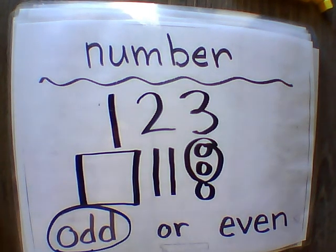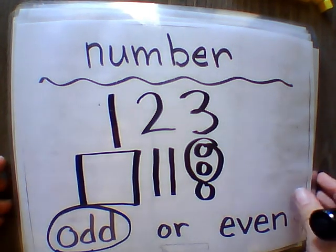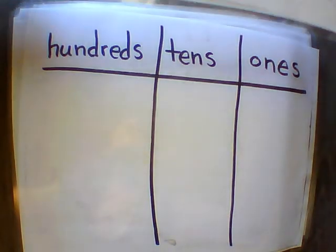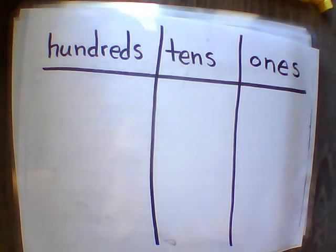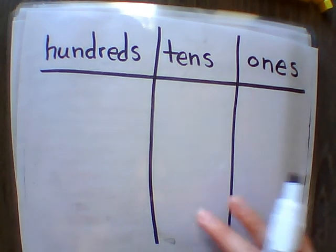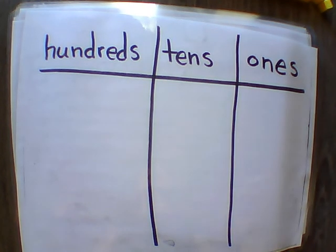The number one hundred twenty-three is an odd number. Now using our one hundred twenty-three, fill in your chart for hundreds, tens, and ones.